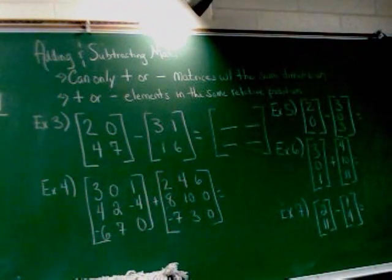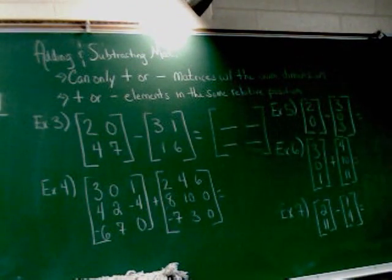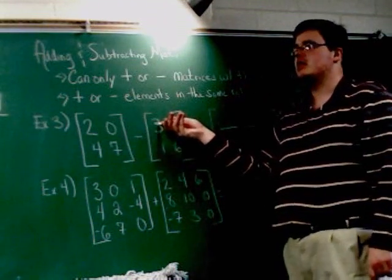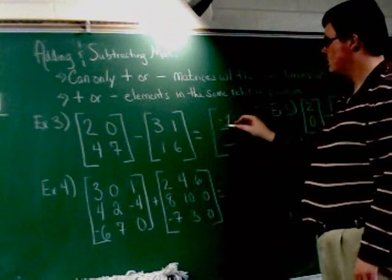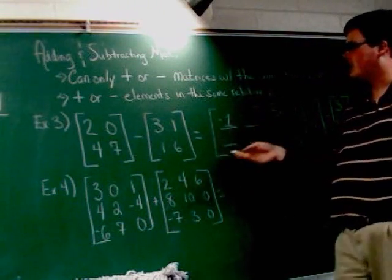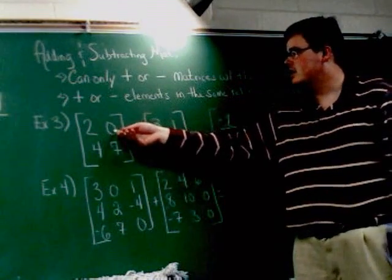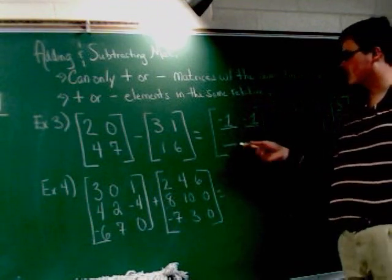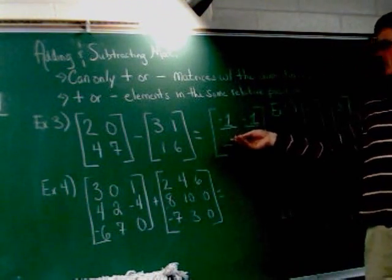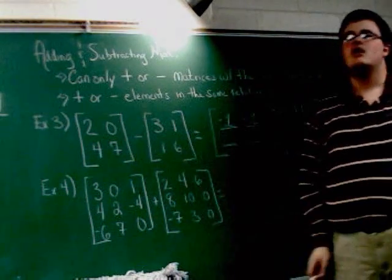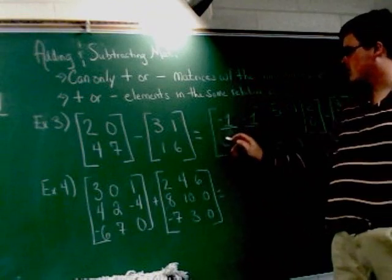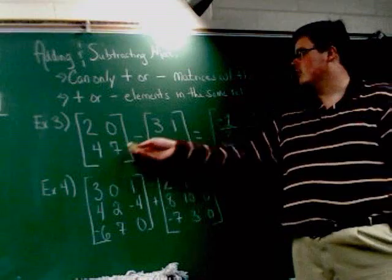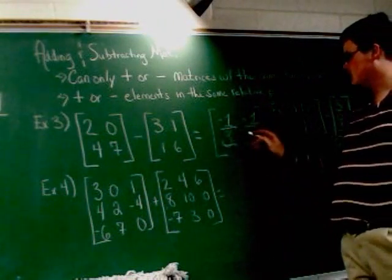And again, we just work relatives. Upper left, upper left, upper right, upper right. It's easy. So upper left spot, upper left minus upper left, 2 minus 3 is negative 1. Upper right spot, upper right minus upper right, 0 minus 1 is negative 1 again. Bottom left spot, 4 minus 1 is 3. The bottom right spot, 7 minus 6 is 1.